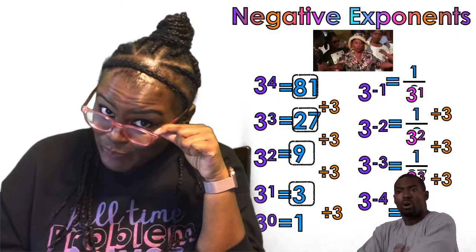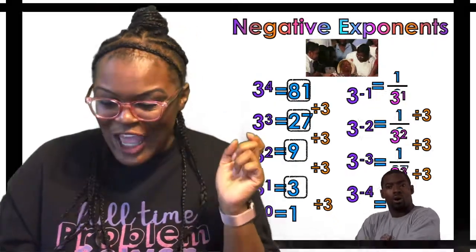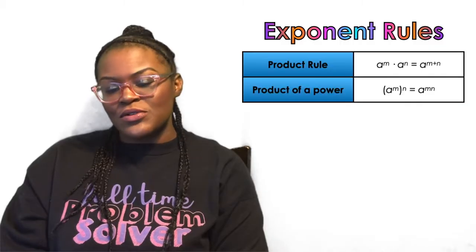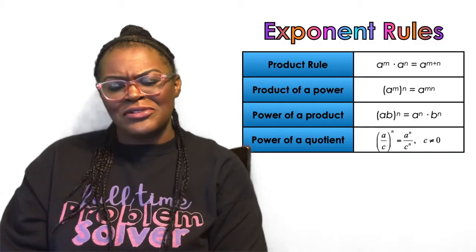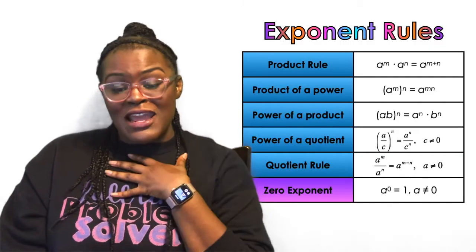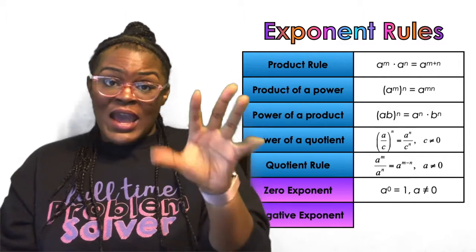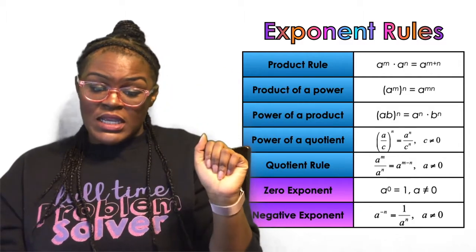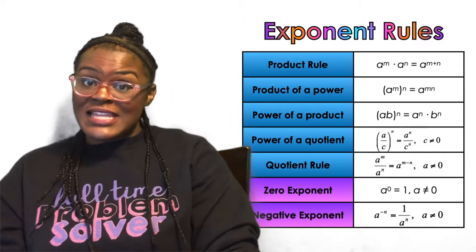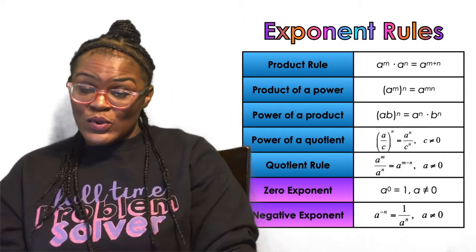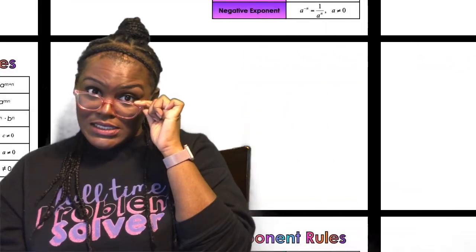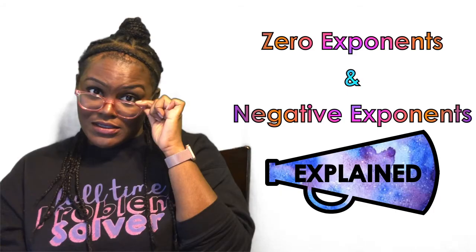You're welcome. Now you have your zero exponent and your negative exponent down, because I just explained both.